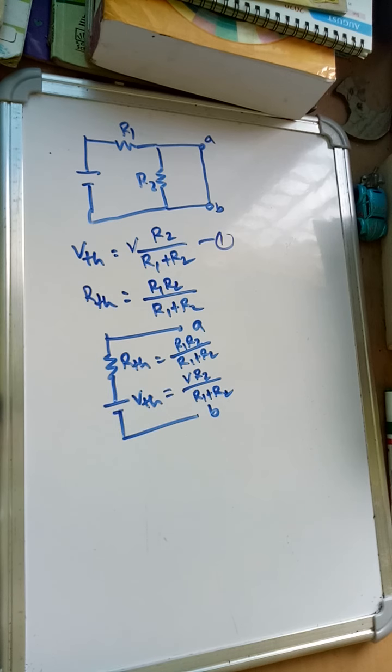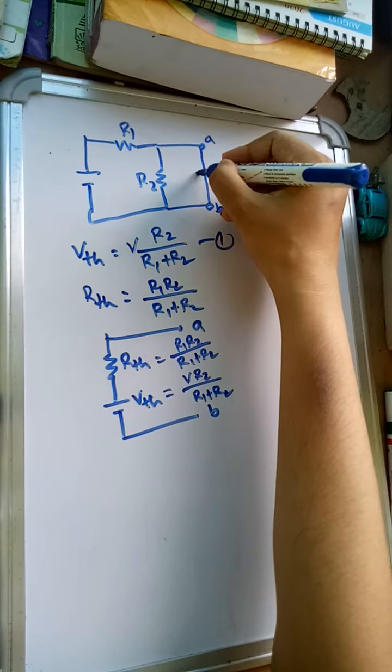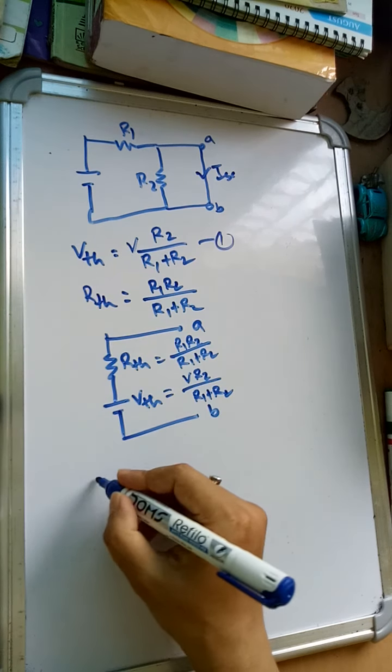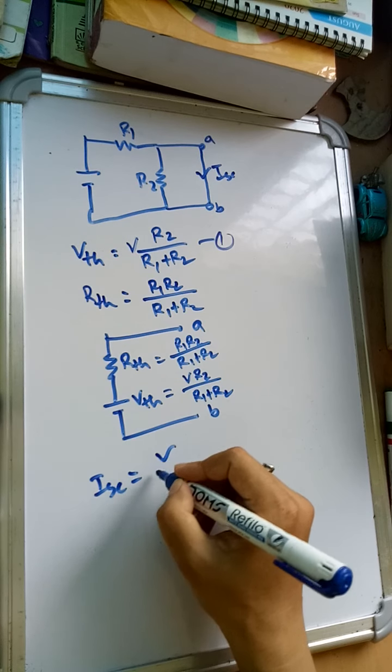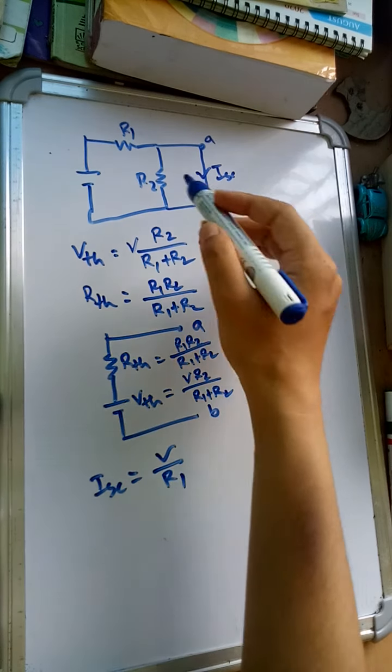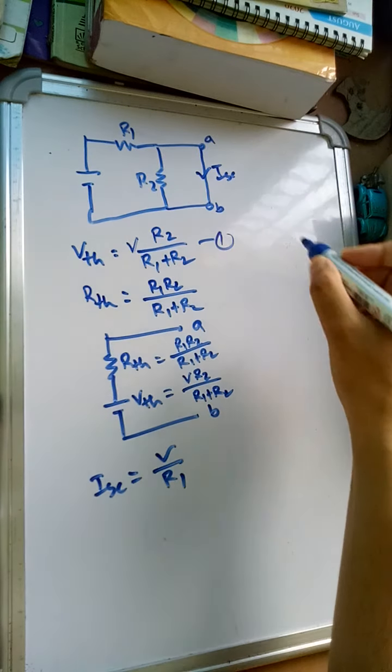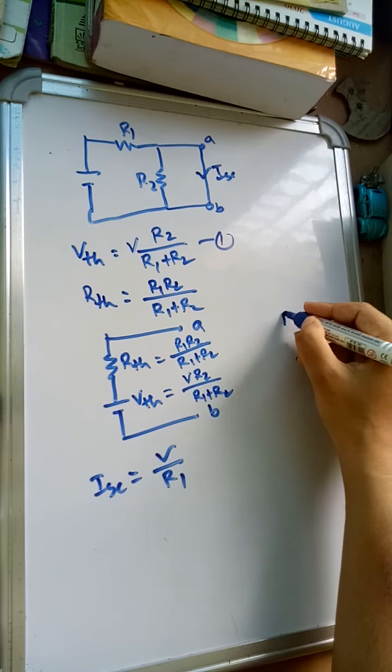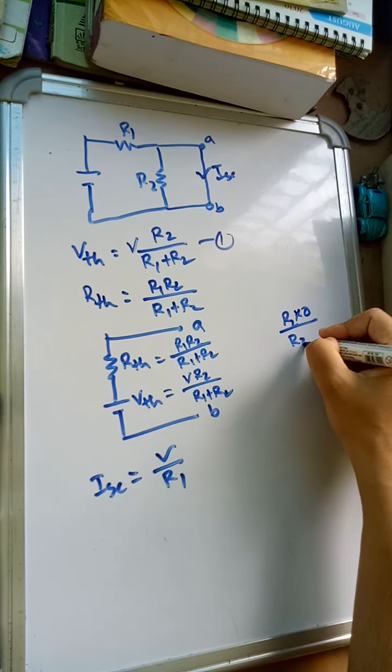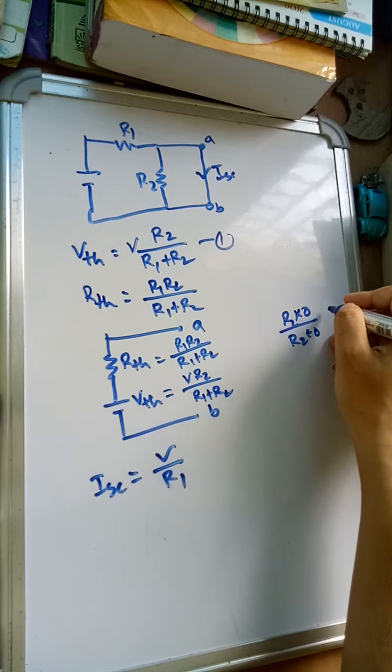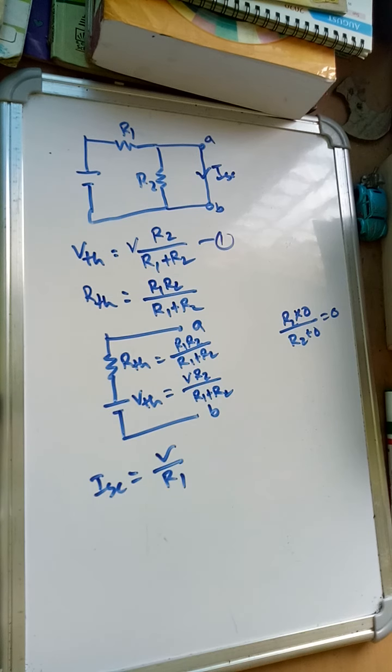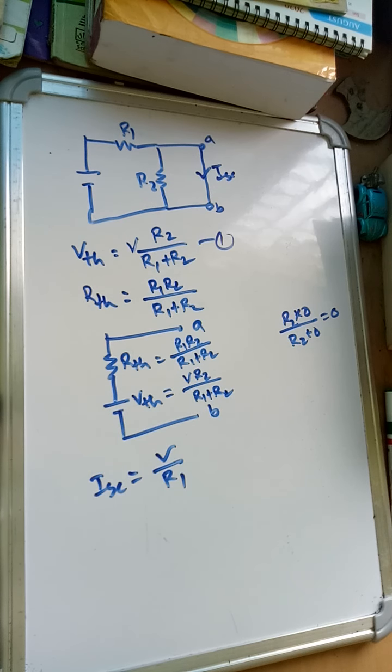For that, the Isc, that is short circuit current, Isc will become V divided by R1, because R2 parallel 0 will be 0. What will be the equivalent resistance of these two terminals? R2, R2*0 divided by R2 plus 0, so R2 multiplied by 0 will be R1 only. So V divided by R1, this is the short circuit current.